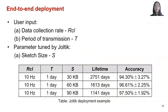Before I talk about implementation and evaluation, I would like to quickly go through how JOTIC is configured and deployed in real-world applications. As a user without any knowledge of universal sketching, there is a systematic approach to tune sketch-related parameters inside the JOTIC system, which can provide users with the desired energy-accuracy trade-off. JOTIC needs two parameters from the user: data collection rate and period of transmission. JOTIC then tunes sketch size to trade off between battery life and estimation accuracy.